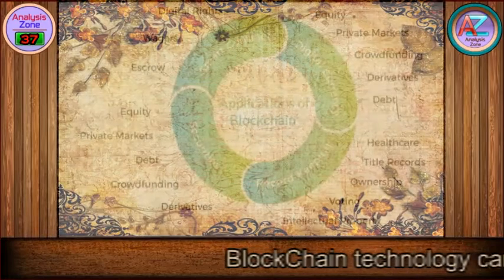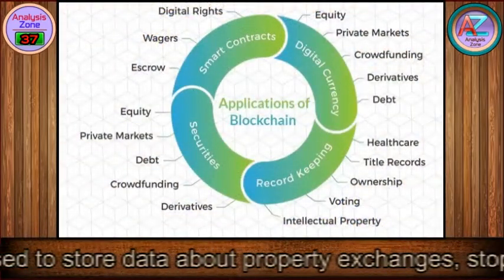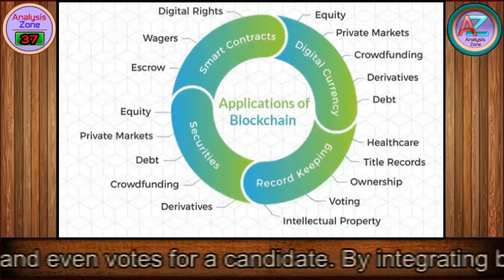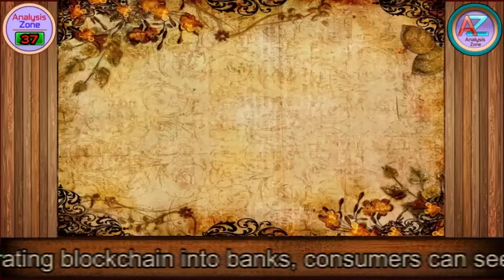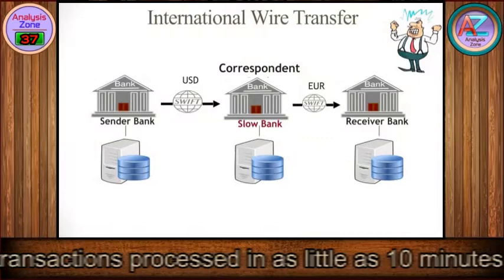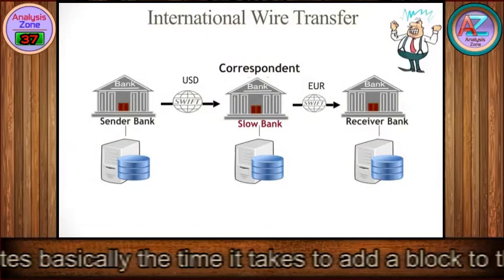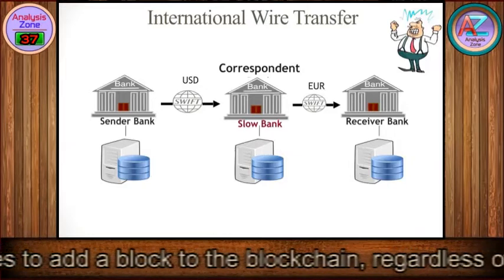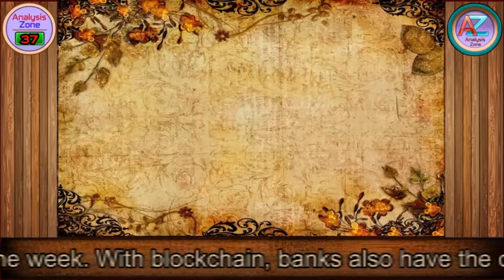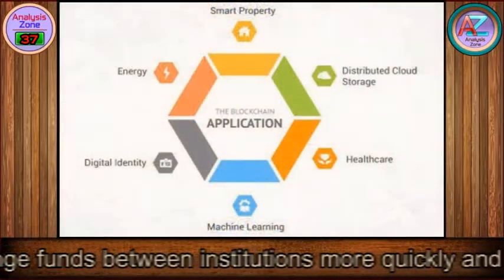Blockchain technology can be used to store data about property exchanges, stops in a supply chain, and even votes for a candidate. By integrating blockchain into banks, consumers can see their transactions processed in as little as 10 minutes — basically the time it takes to add a block to the blockchain — regardless of the time or day of the week. Banks also have the opportunity to exchange funds between institutions more quickly and securely.